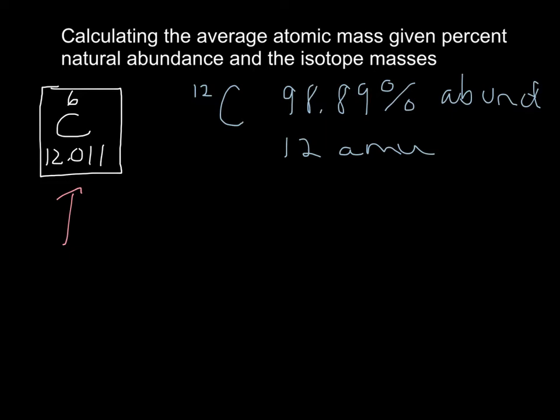Now let's look at carbon-13, which is the other major isotope. So we know the only difference, we still have six protons, but now we have seven neutrons, and this little friend is 1.11% naturally abundant.